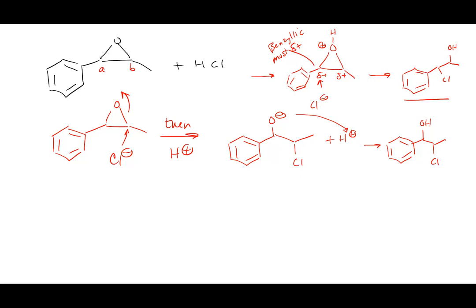Starting to add groups inside the ring: the first question is, if the benzene ring is really stable, how can I add something inside of it? The first reaction inside the ring is a unique reaction called Birch reduction. This is going to destroy the aromaticity of the ring. I can do it, but it's going to take super harsh conditions.